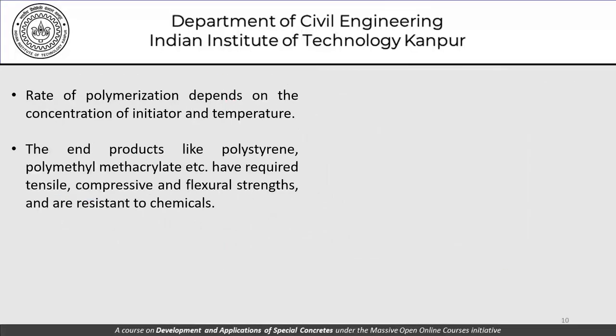The rate of polymerization depends on the concentration of the initiator and the temperature. End products like polystyrene or polymethyl methacrylate (PMMA) have the required tensile, compressive and flexural strengths and are resistant to chemicals. We have largely mastered the art of controlling polymerization to achieve the desired kind of tensile, compressive, or flexural strengths at least to some extent.